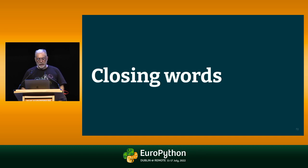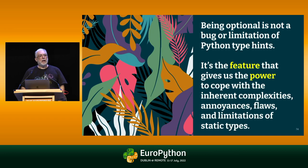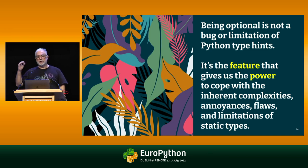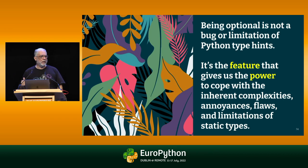Closing words — I have to say these things every time I talk about Python typing: being optional is not a bug or a limitation of Python type hints. It's the feature that gives us the power to cope with the inherent complexities, annoyances, flaws, and limitations of static types. Please do not decide in your team that everything has to have type hints always — that's the only way to use a type checker in the strictest possible mode. This is really bad. It's like deciding that every code has to be 100% test covered. 95% is good enough a lot of times. That was my talk — thank you so much.